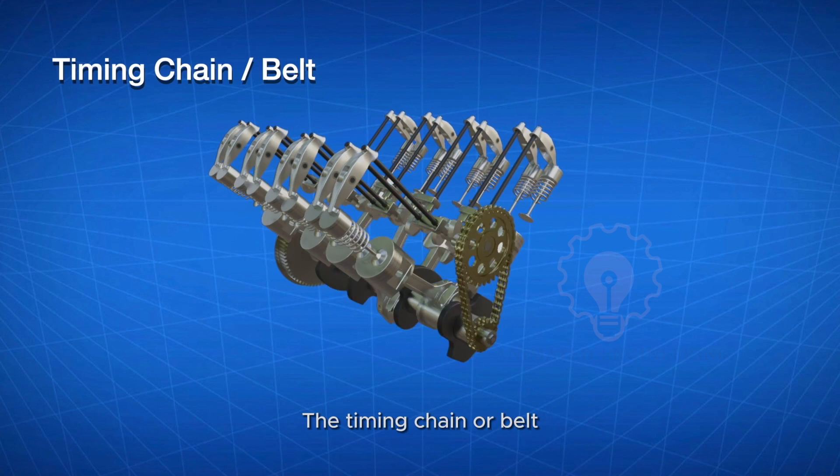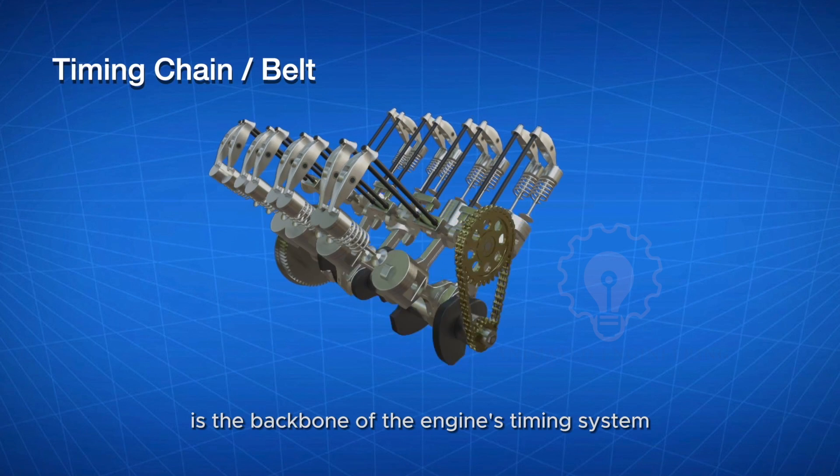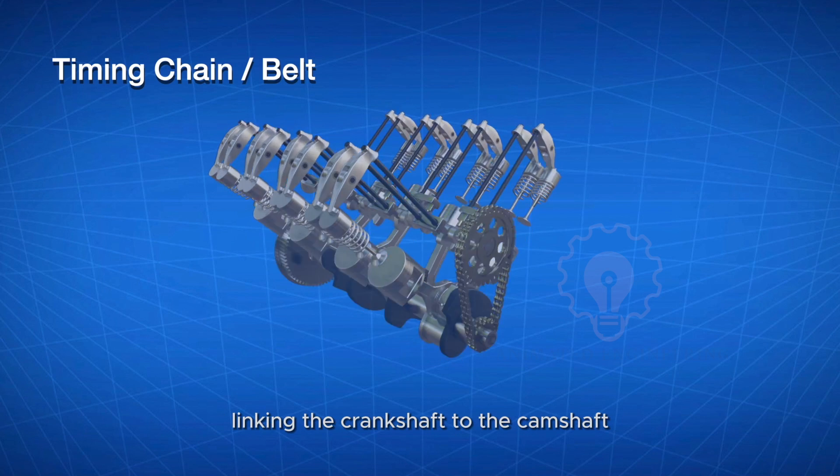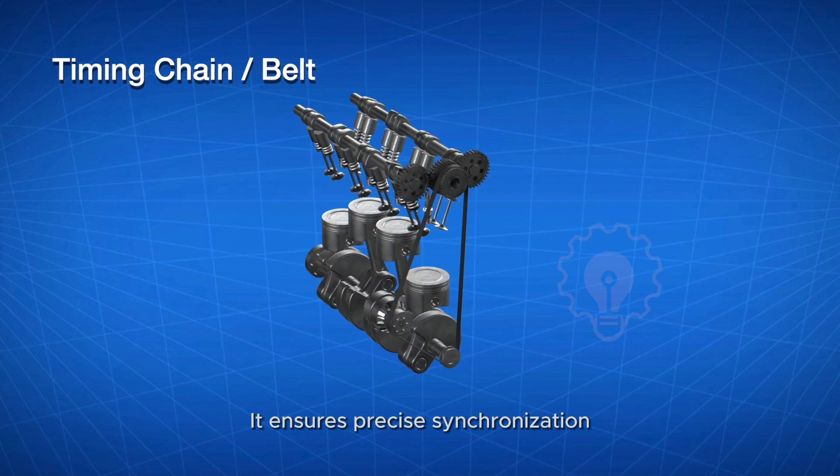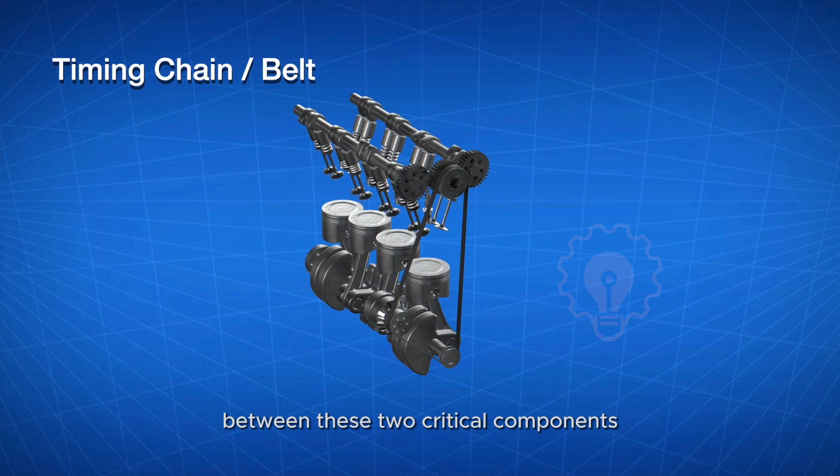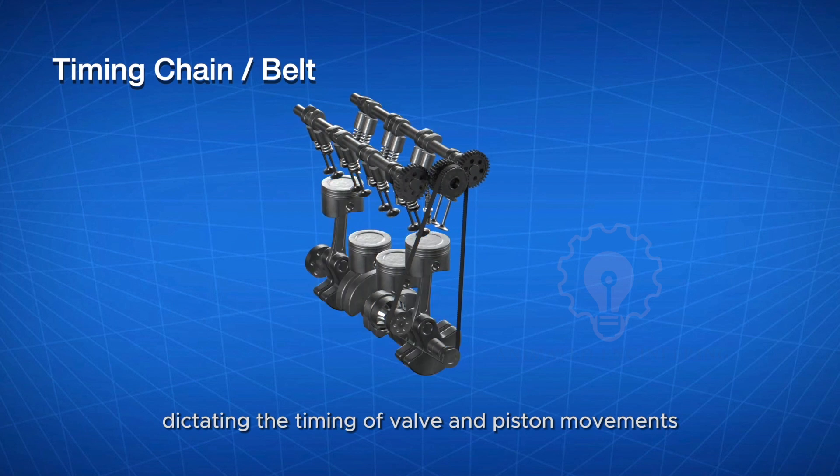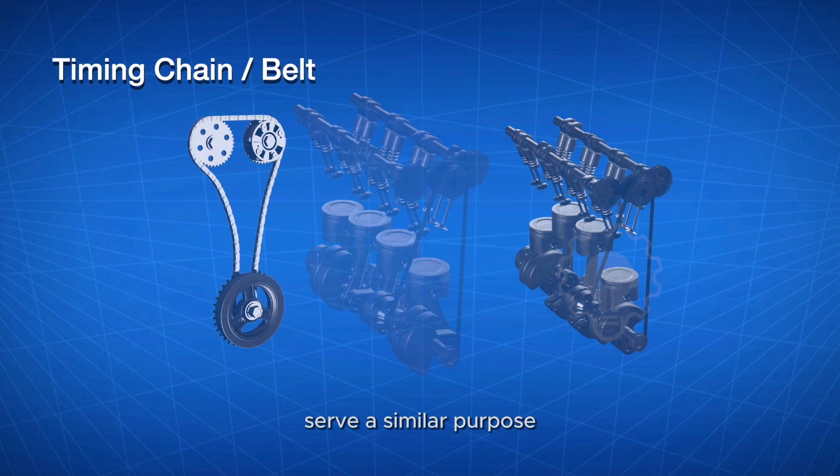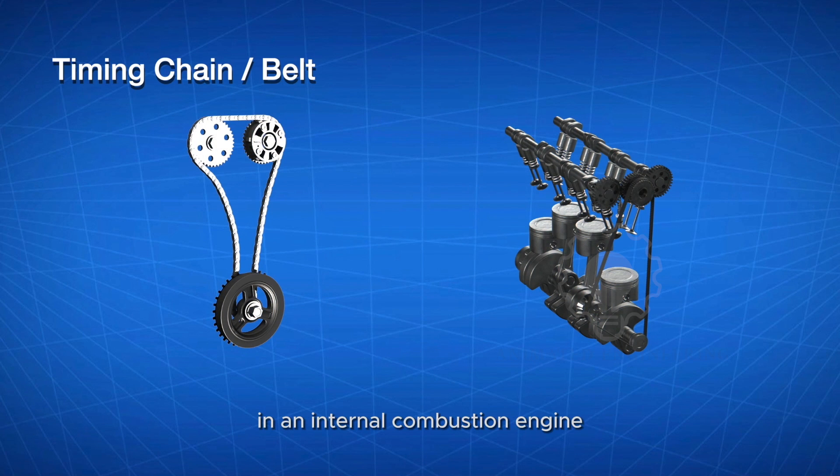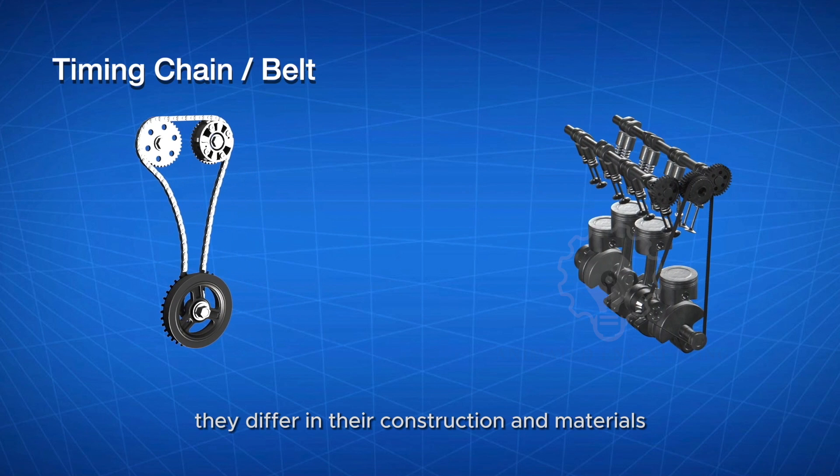Timing chain/belt: The timing chain or belt is the backbone of the engine's timing system, linking the crankshaft to the camshaft. It ensures precise synchronization between these two critical components, dictating the timing of valve and piston movements. While both timing chains and timing belts serve a similar purpose in an internal combustion engine, they differ in their construction and materials.